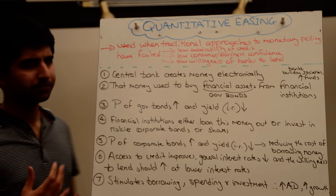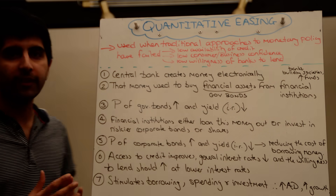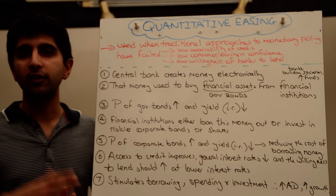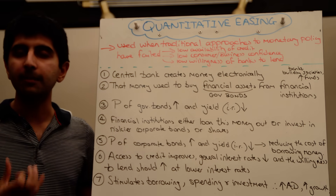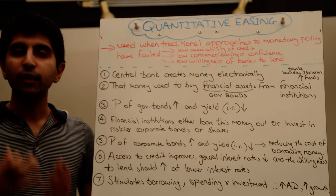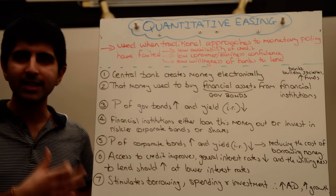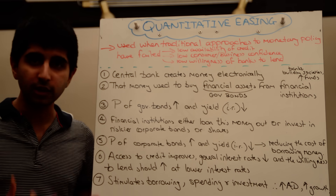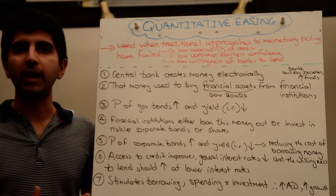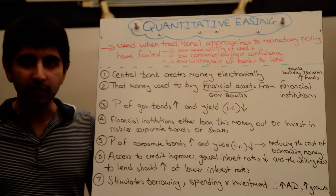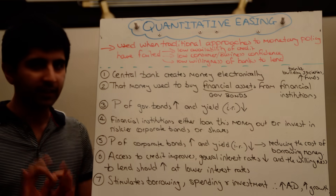Therefore, if all else fails with interest rates, there is another approach to monetary policy — and that's a direct increase in the money supply through quantitative easing. Not necessarily printing money in the traditional sense, but essentially creating more money and injecting it into the economy, although subtly.